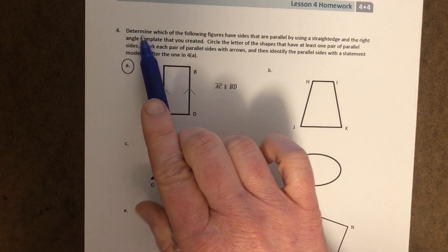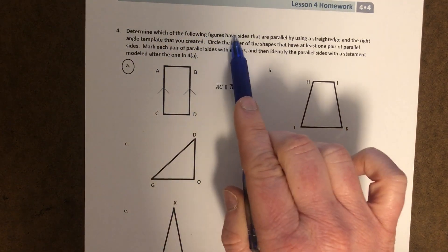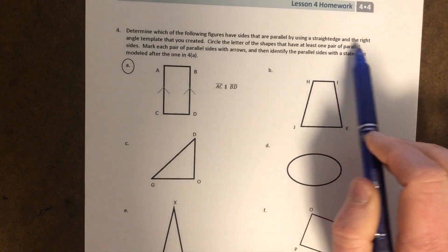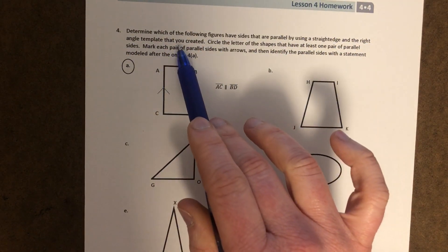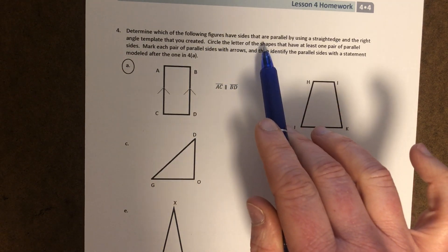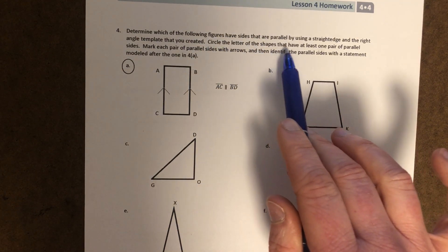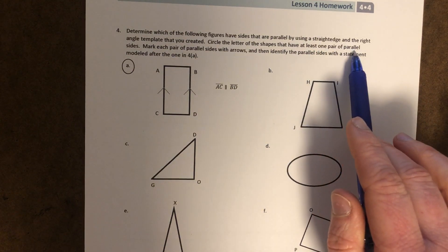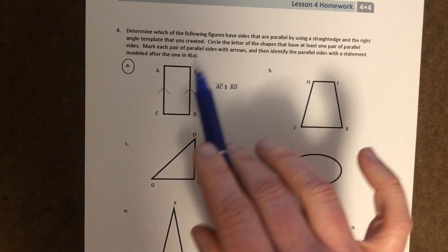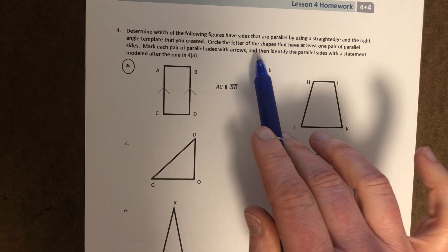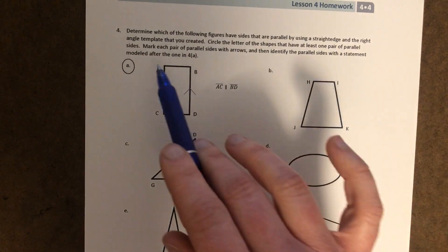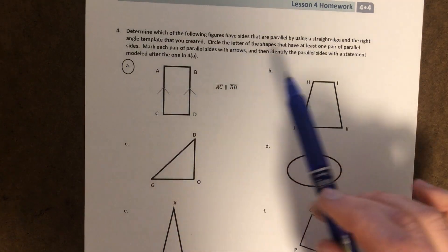So determine which of the following figures have sides that are parallel by using a straightedge and the right angle template that you created. Circle the letter of the shapes that have at least one pair of parallel sides. Mark each pair of parallel sides with arrows and then identify the parallel sides with a statement modeled after the one in 4A.